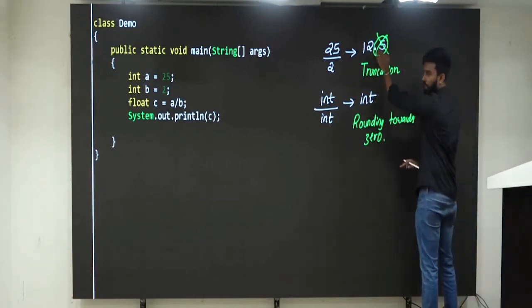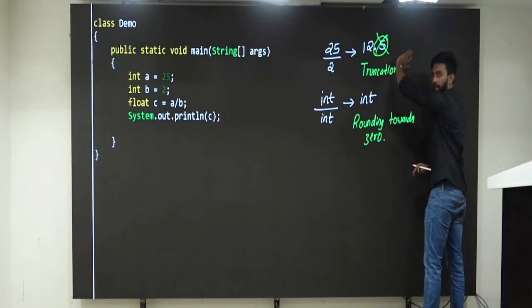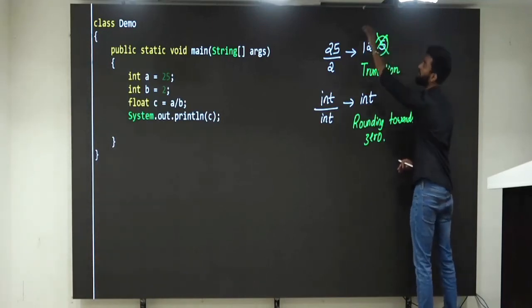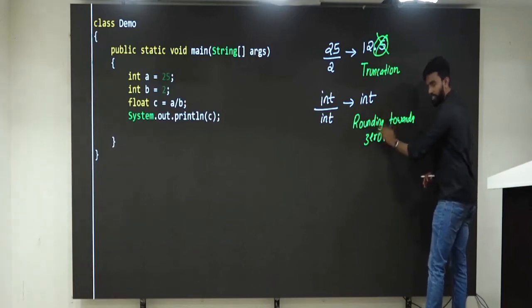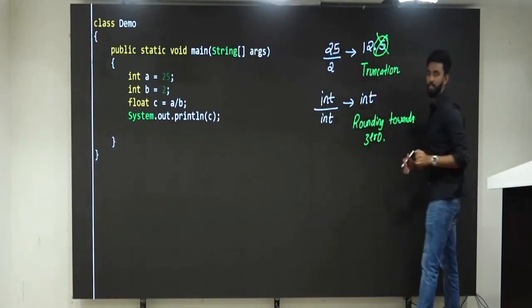it's called as rounding towards 0. What is it called as? Rounding towards 0. 12.5, because see, 12.5 you can round towards 13, or you can round towards 12. Rounding towards 12 is only called as rounding towards 0, because 0 is towards this side. Clear till here?